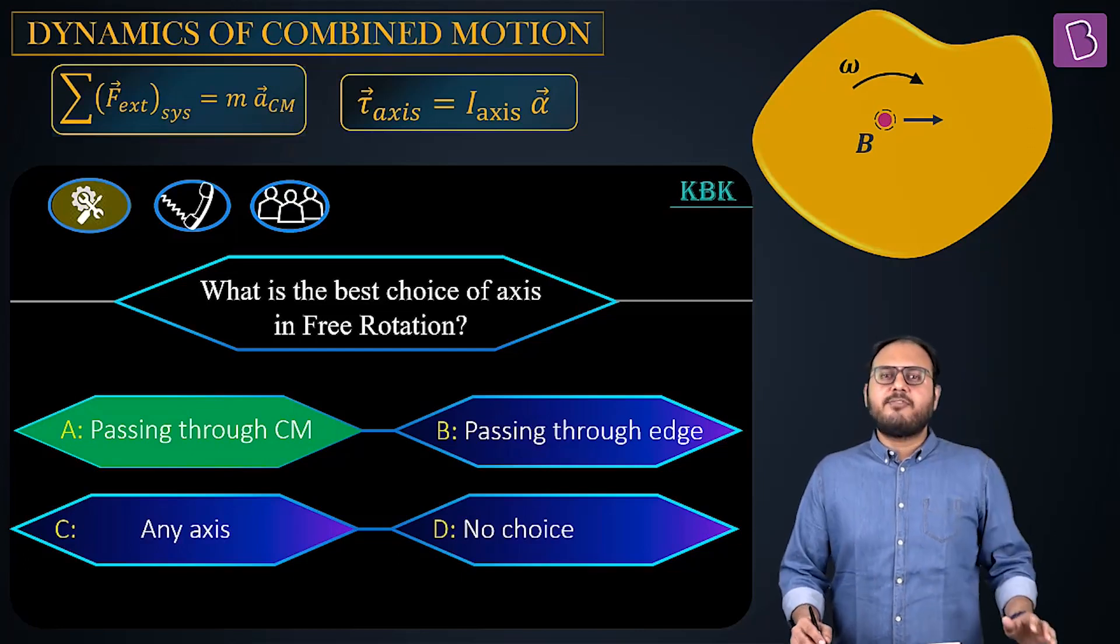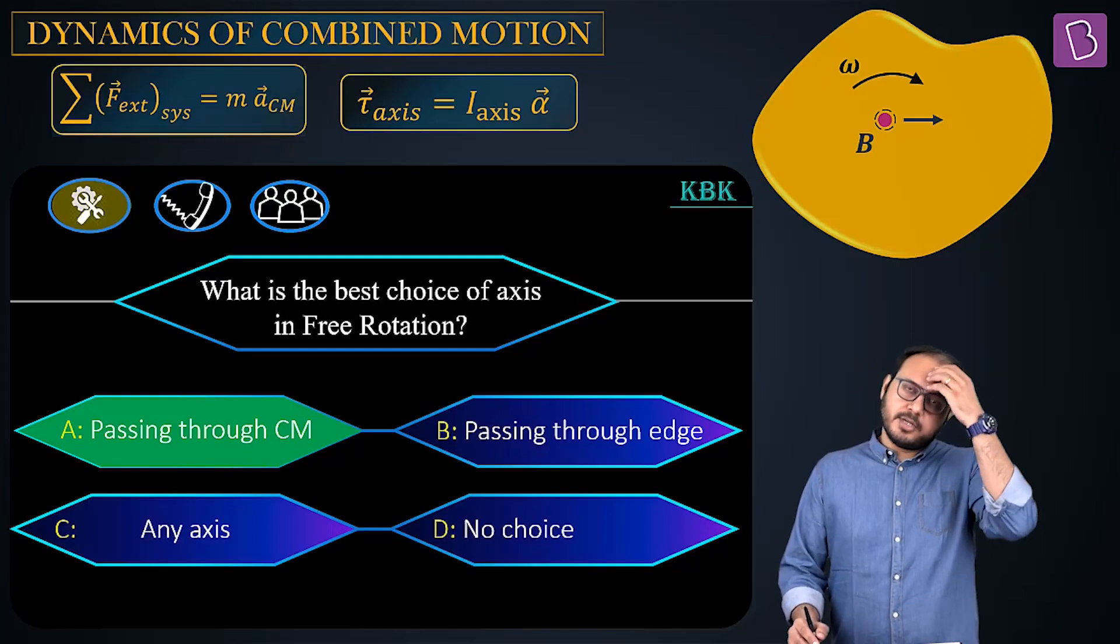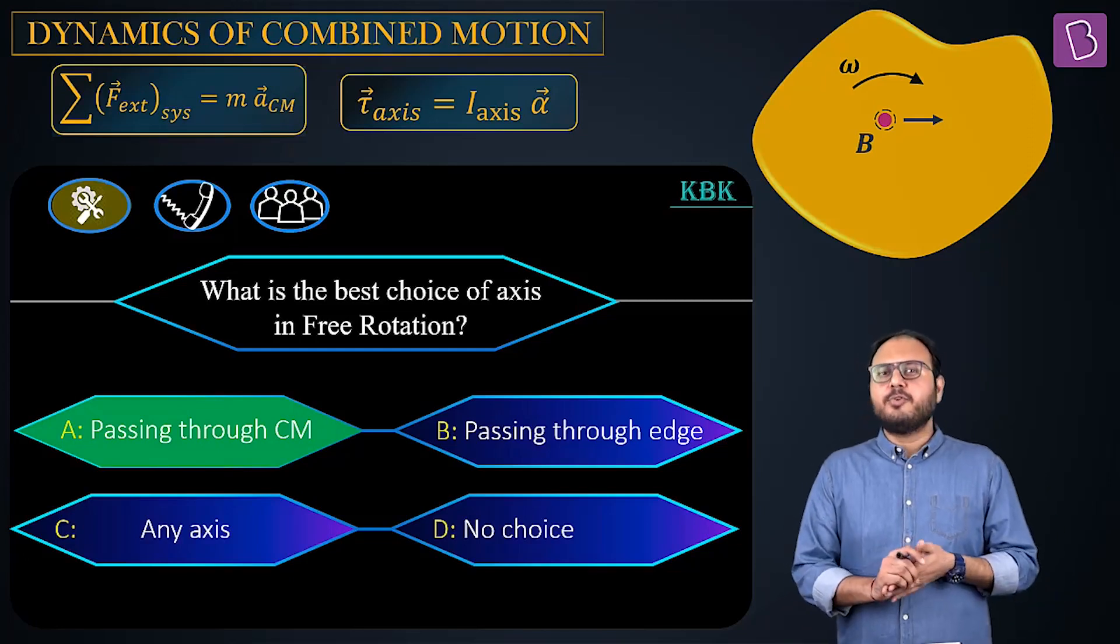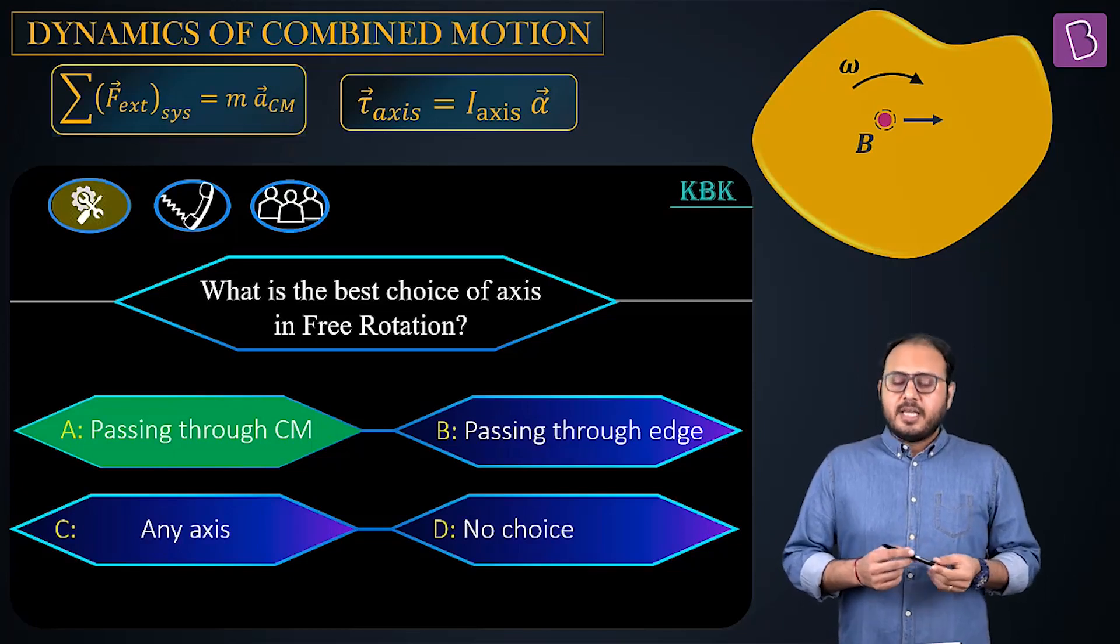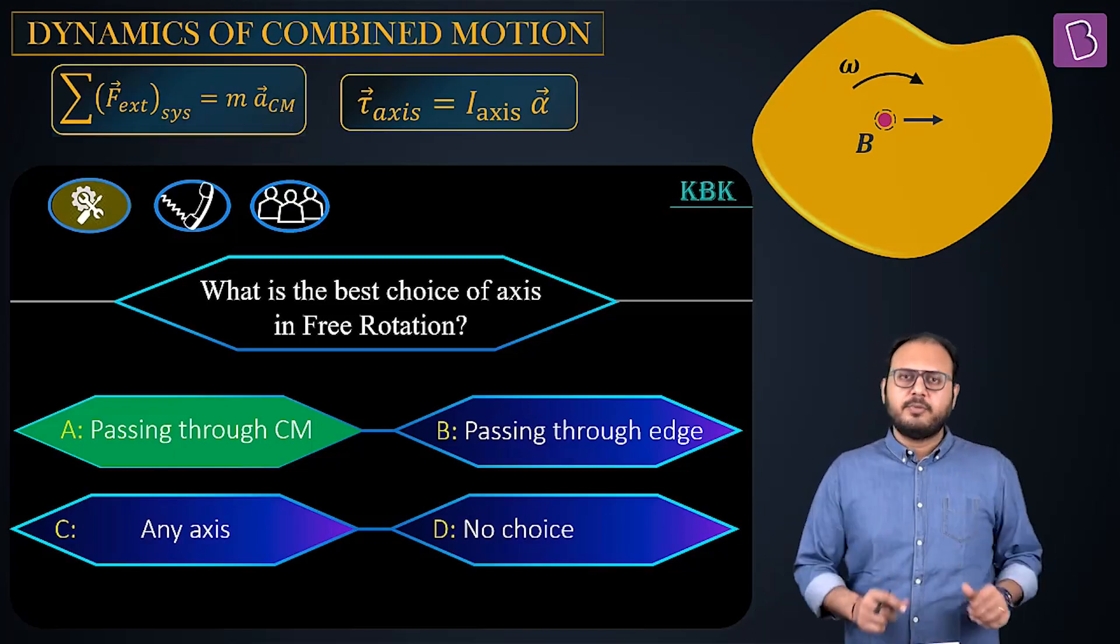The axis passing through CM. Torque equal to I-alpha best option, not the only option, best option is center of mass. How many of you thought about this? If you could think about it in this detail, kudos, hats off, high five.